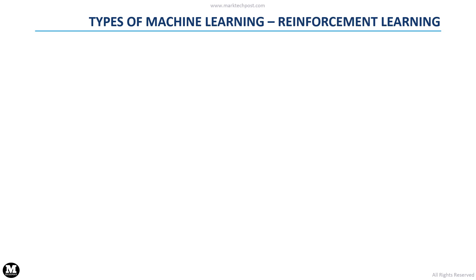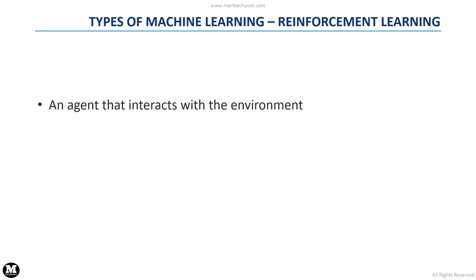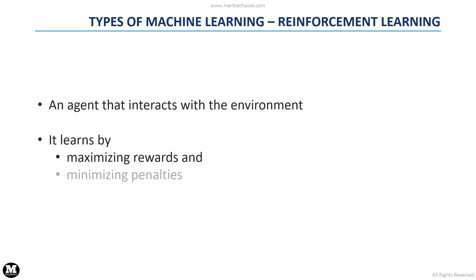The last type of machine learning is called reinforcement learning. In this case, we have an agent that interacts with the surrounding environment. It will receive rewards and penalties based on its behavior. Its purpose is to learn by maximizing the rewards and minimizing the penalties.